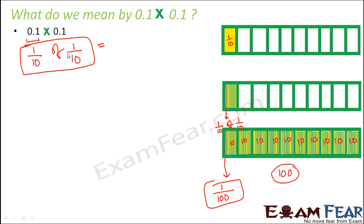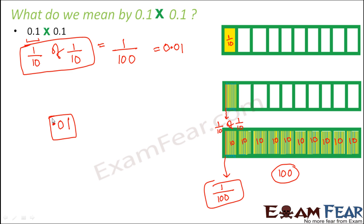So this shows that one tenth of one tenth is one hundredth, which is 0.01. Now the tip to remember: just normally multiply, forget about the decimal sign. 1 into 1 is 1, so write 1. Now for placing the decimal point — here after decimal you have 1 digit, and here also 1 digit, so you have 2 digits after decimal considering both numbers. Place the decimal so that you have 2 digits after decimal. Therefore the answer is 0.01.